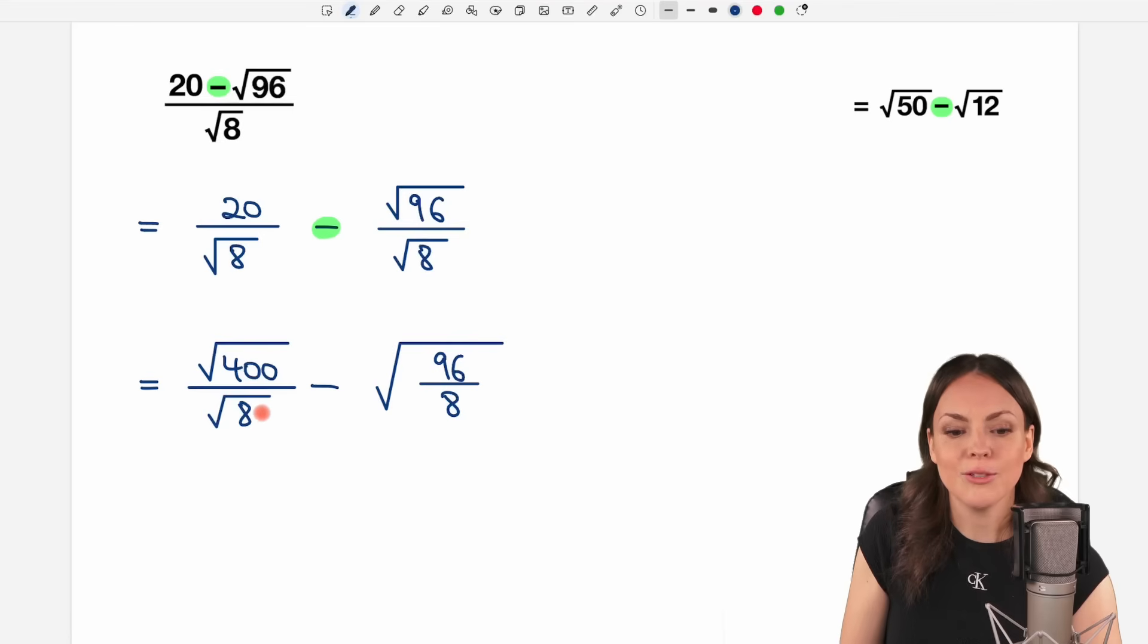And now I can do the same here, what we did here. I can write this as one big square root, and write the fraction inside. I have my